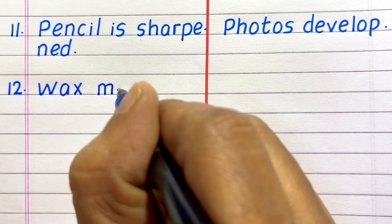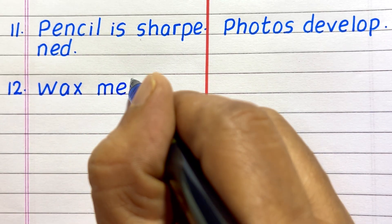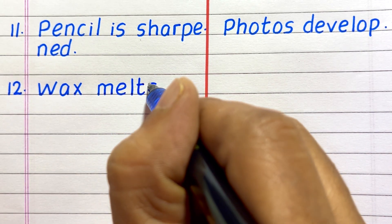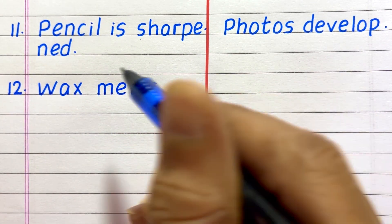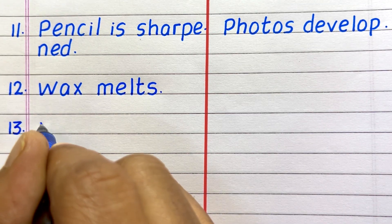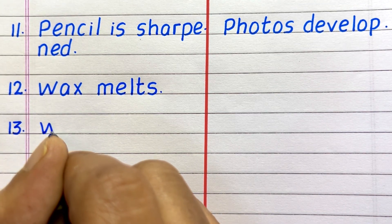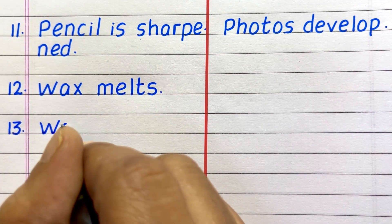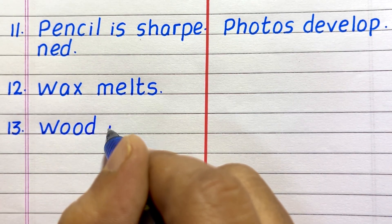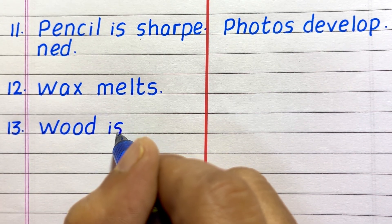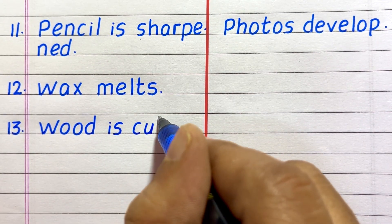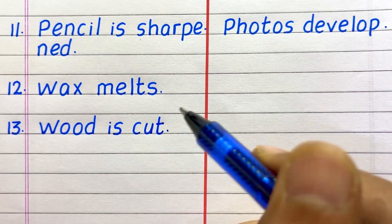Twelfth example of a physical change is wax melts. Thirteenth, wood is cut.